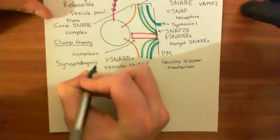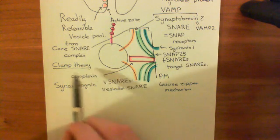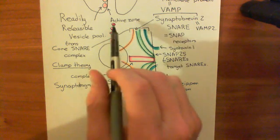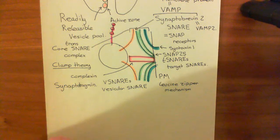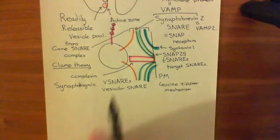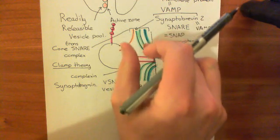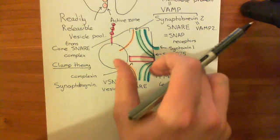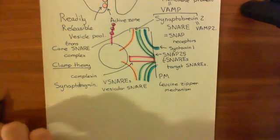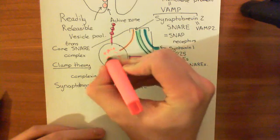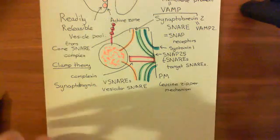Calcium comes in and binds to synaptotagmin. According to the clamp theory, synaptotagmin then moves complexin out of the way — it removes this clamp protein that was clamping apart the vesicle membrane from the plasma membrane. Now the core SNARE complexes can continue zipping up, bringing the two membranes closer and closer together until they fuse. That is how the neurotransmitter, which is inside the synaptic vesicle, is released into the synaptic cleft onto the post-synaptic cell.